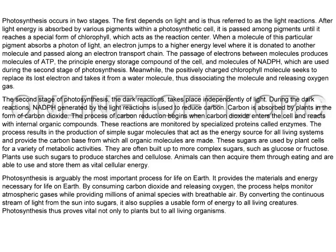These sugars are used by plant cells for a variety of metabolic activities. They are often built up to more complex sugars, such as glucose or fructose. Plants use such sugars to produce starches and cellulose. Animals can then acquire them through eating and are able to use and store them as vital cellular energy.